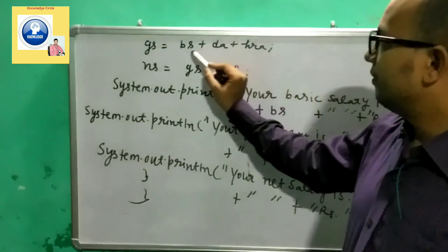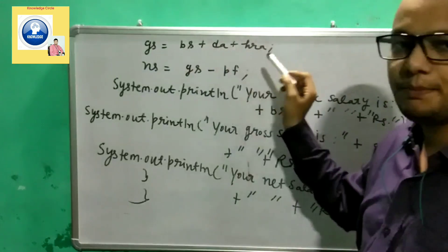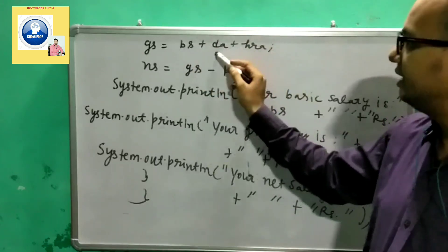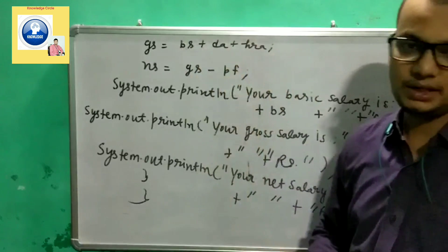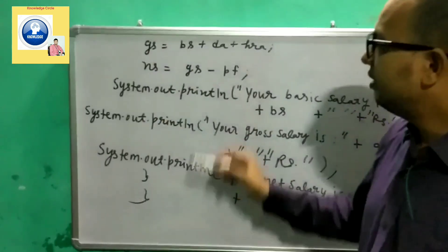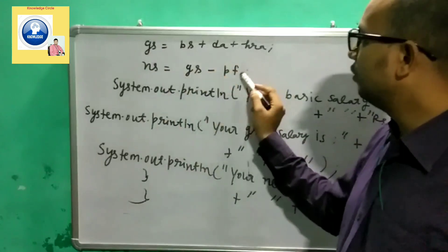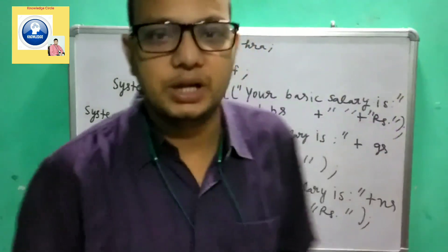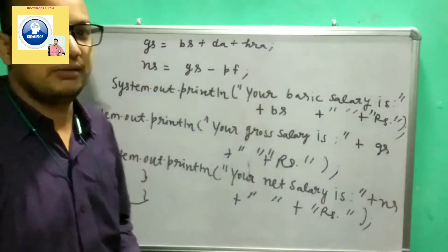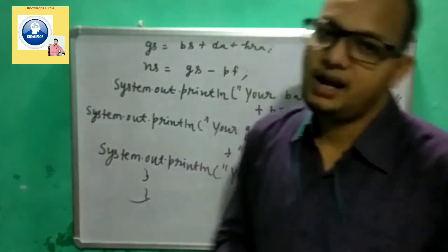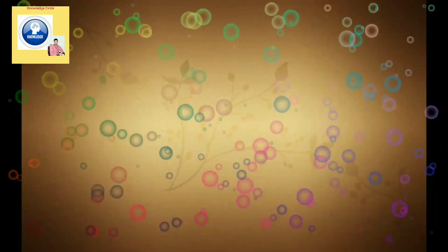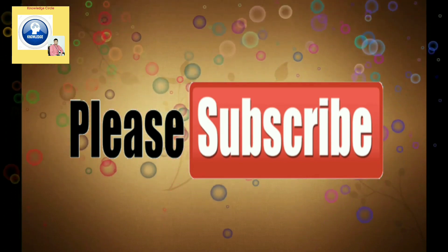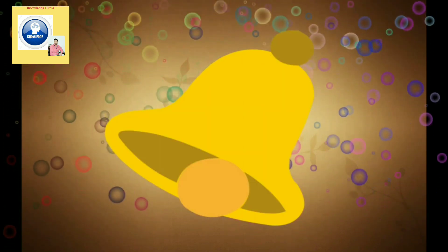To summarize: DA and HRA percentages are given in the question. Calculate DA and HRA from basic salary, then add basic + DA + HRA to get gross salary. Subtract PF from gross salary to get net salary. That is the complete program to calculate gross salary and net salary. If you liked this video, please like, share, and subscribe, and press the bell icon for the latest notifications. Thank you everyone.